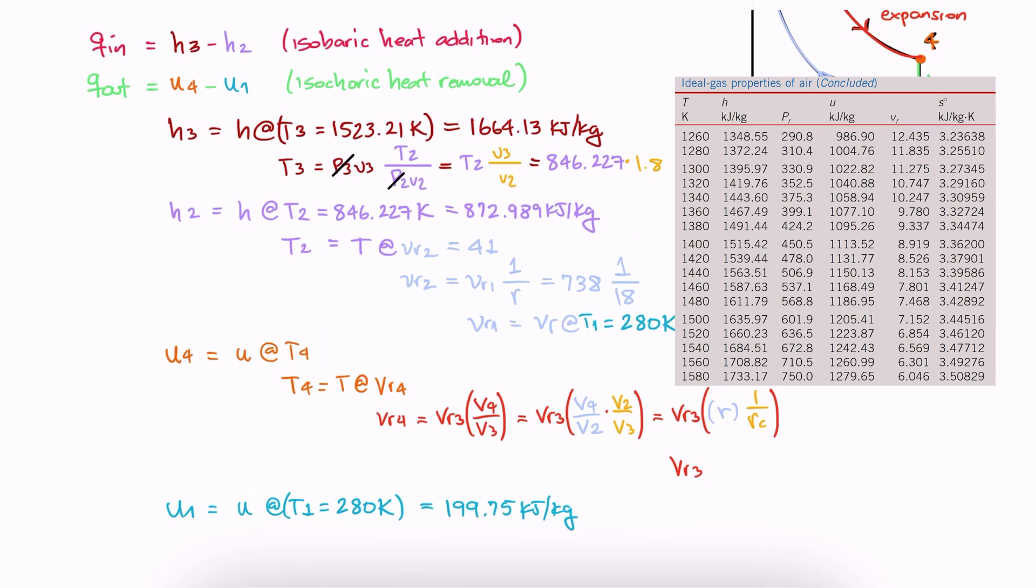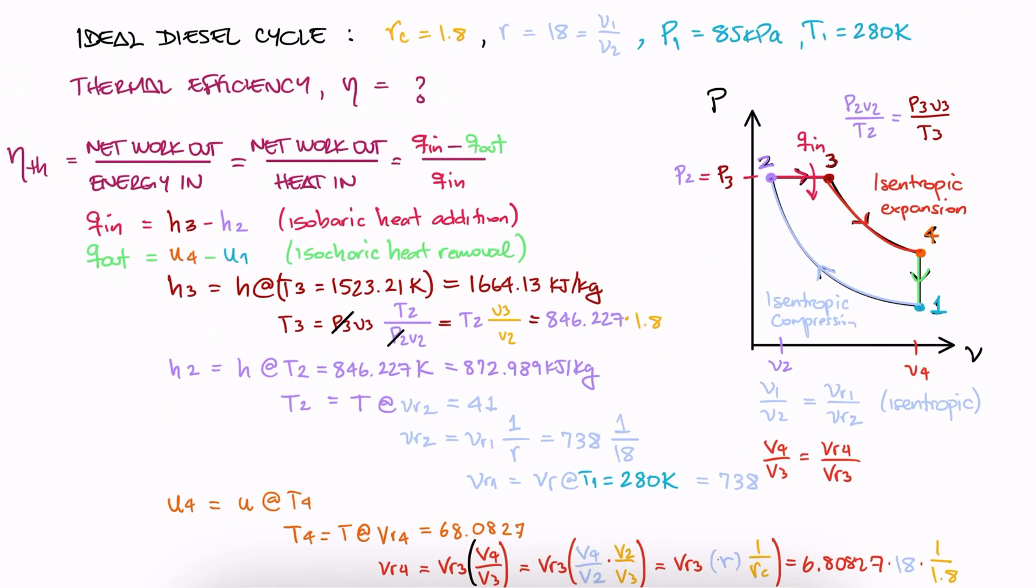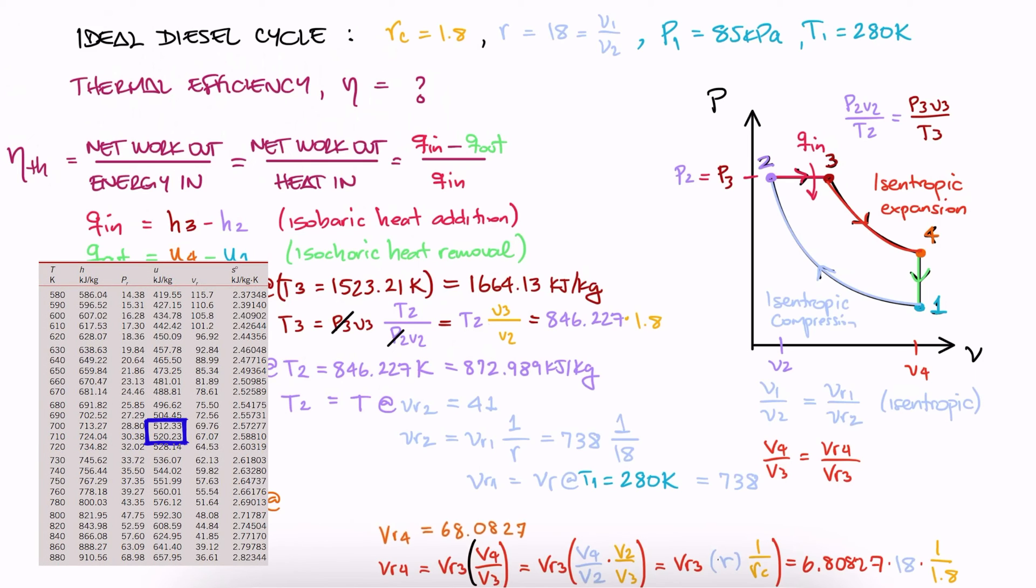We interpolate for Vr3 with T3, which gives us Vr4. And with it, we look up the internal energy value that corresponds to it, U4.